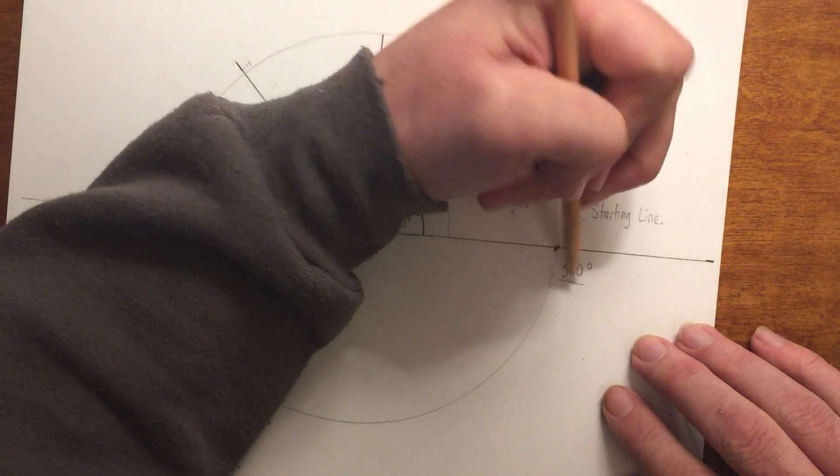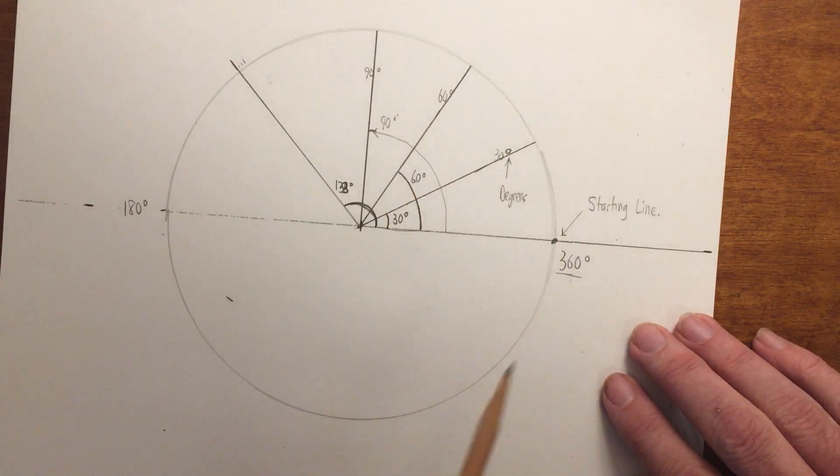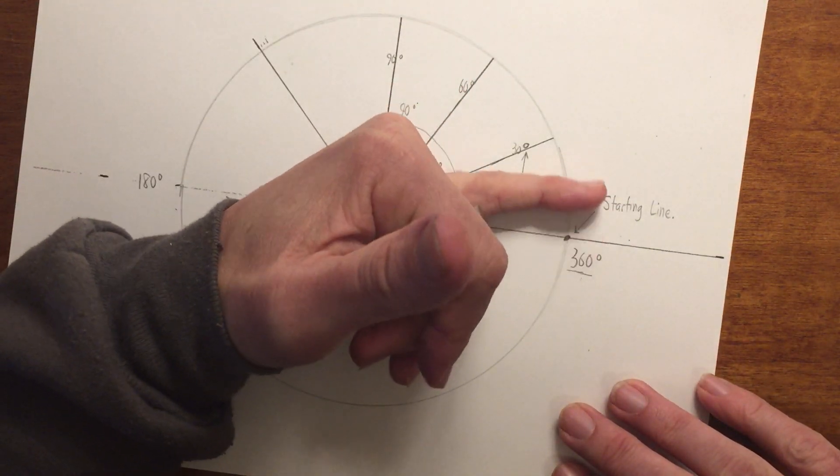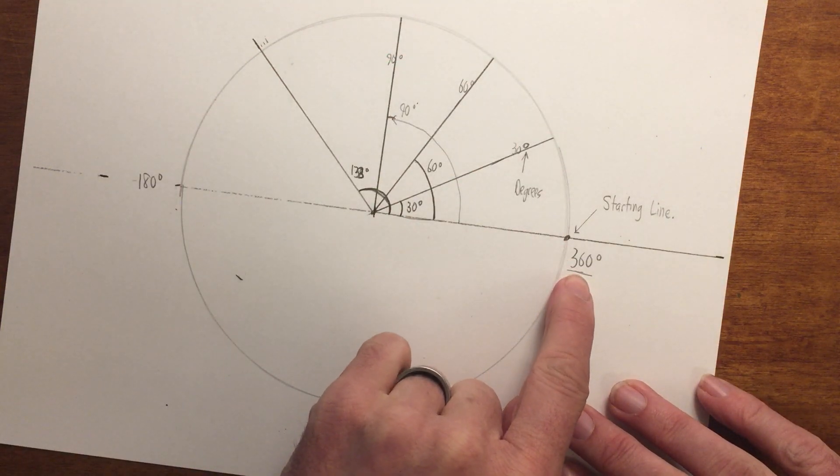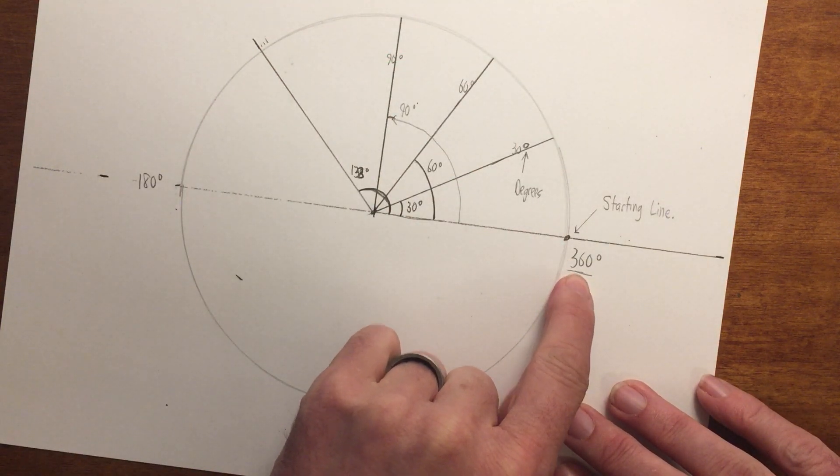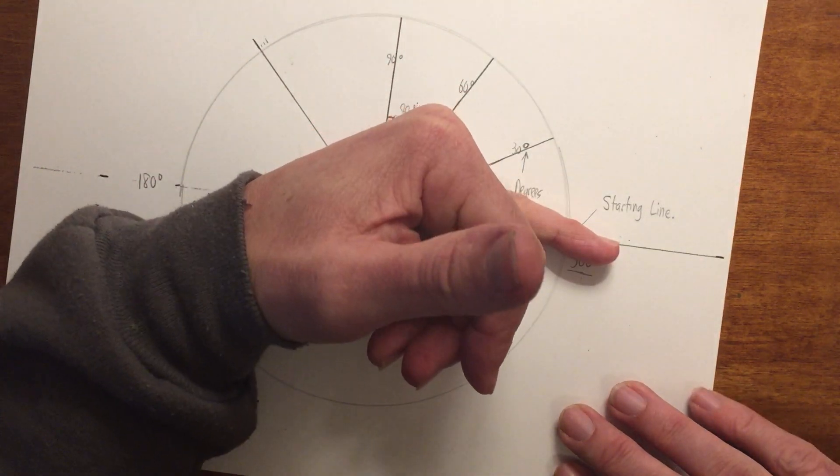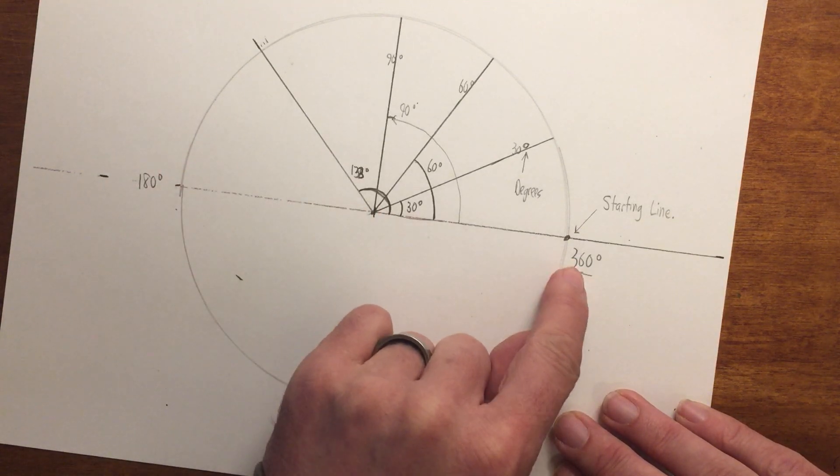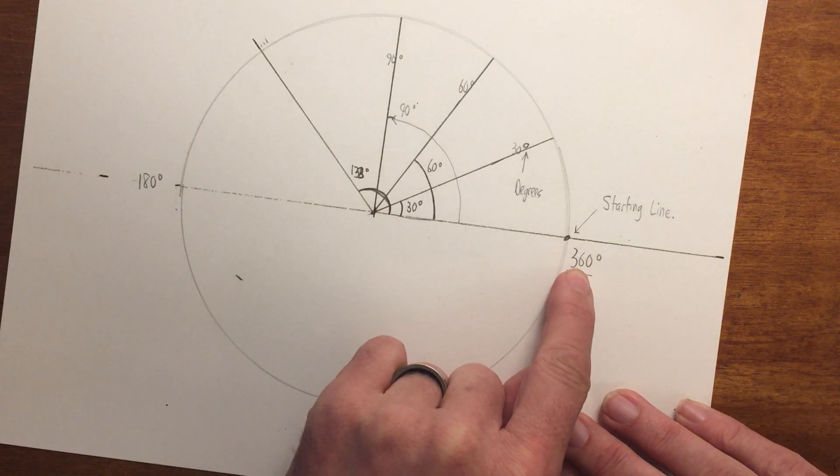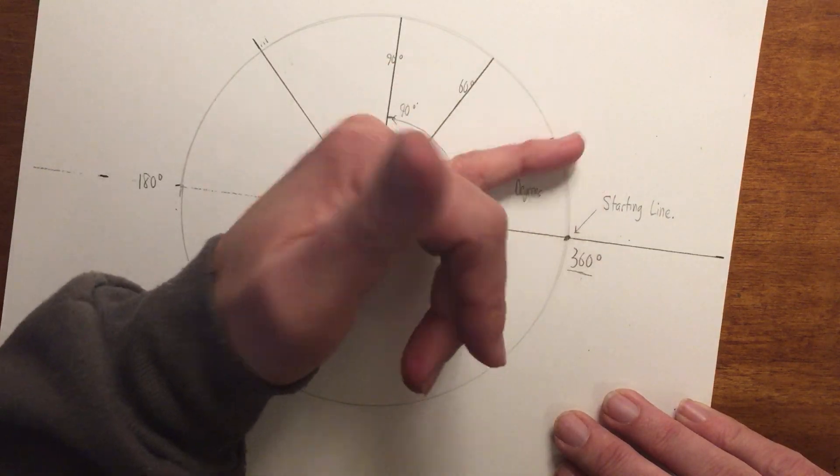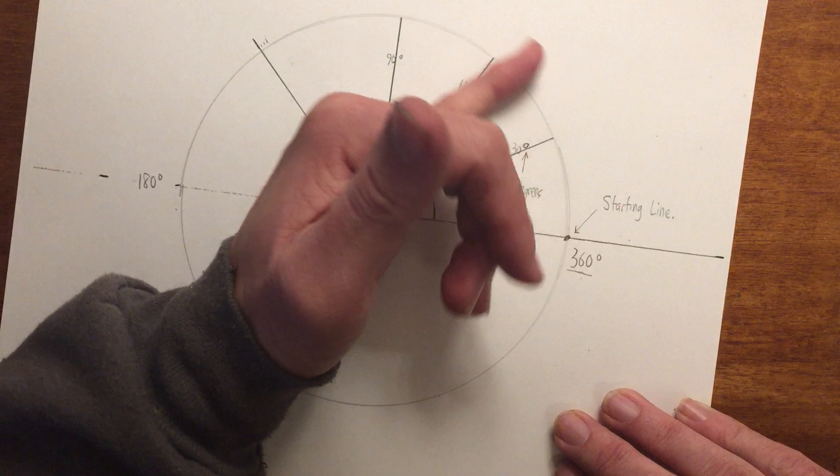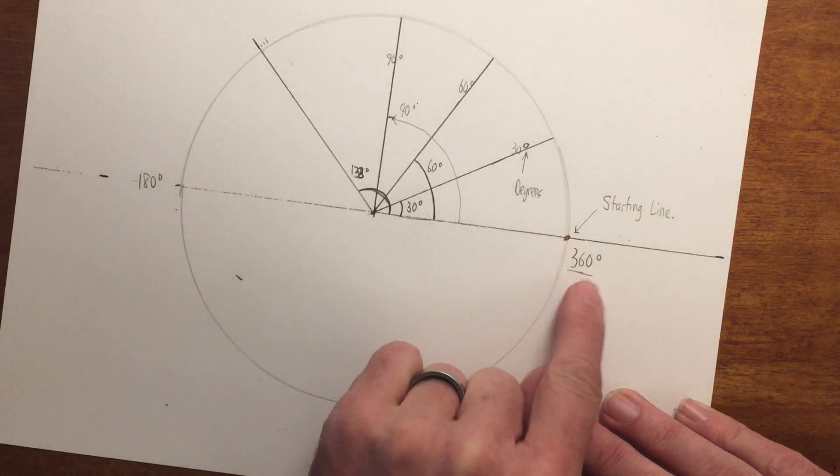And where does that number come from, 360 degrees? Well it actually comes from, I believe it's ancient Egypt, and they actually thought the year, instead of the 365 days of a year that we know we have, 365 and a quarter, which is why we have leap year, they thought there was 360 days of the year. So it took 360 degrees, or days, to start a brand new year, so they made the measurement, all the way around the circle, 360.